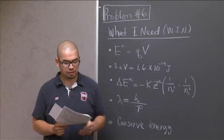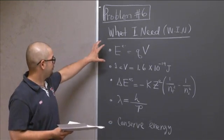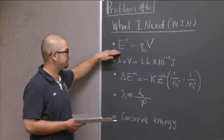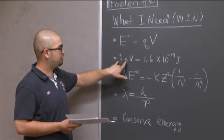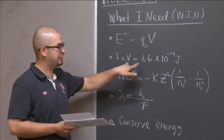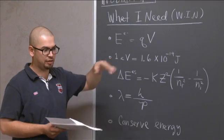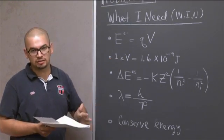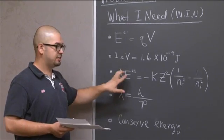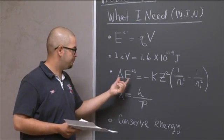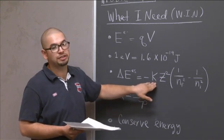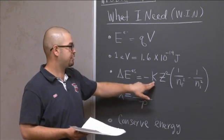So before you start the problem, you should know what the energy is of a charged particle in an electric field, which is given by this equation. The conversion from an electron volt to a joule, which is just the conversion of energy, and this should be given to you on your table of constants. Also, the energy associated with an emission spectrum, which is given by this equation, where k is actually the ionization energy of hydrogen, which is 13.6 electron volts.